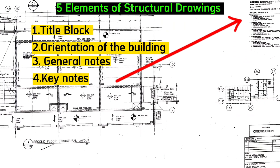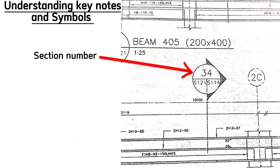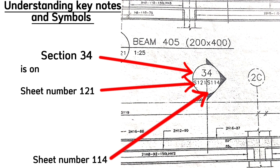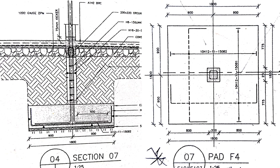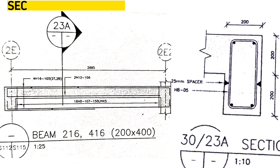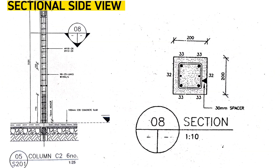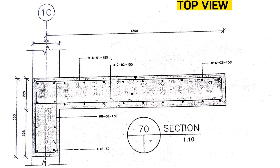The fourth element is key notes, which simplify notations in the blueprints. For example, when you find a symbol like this one, the top number indicates the section number and the bottom indicates the sheet number — so this is section number 34, sheet numbers 121 and 114. A section reveals the interior features as an imaginary cutting plane through a path, whereas the top view displays what is seen from above. For example, a footing looks like this in sectional view and like this in top view; similarly for a beam, columns, and stairs — among others.